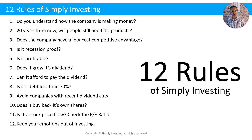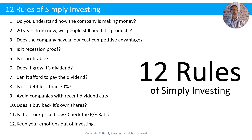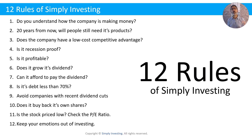Rule number one: do you understand how the company is making money? If you don't, skip it. Rule number two: 20 years from now, will people still need its products and services? If not, skip it. Rule number three: does the company have a low-cost competitive advantage? Rule number four: is the company recession proof? We only want to invest in companies that are recession proof because we never know when the next recession is going to happen.